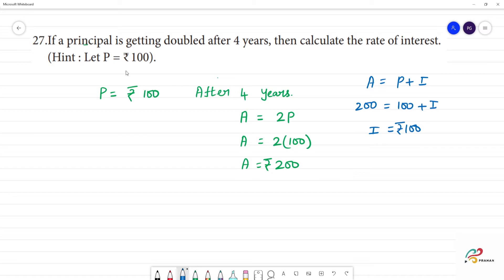Okay, now we are going to calculate rate of interest. First, we know that I is equal to P×n×r divided by 100.